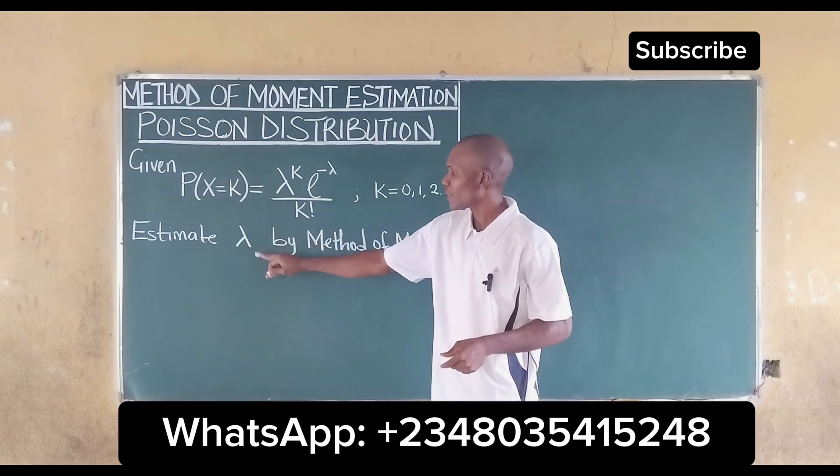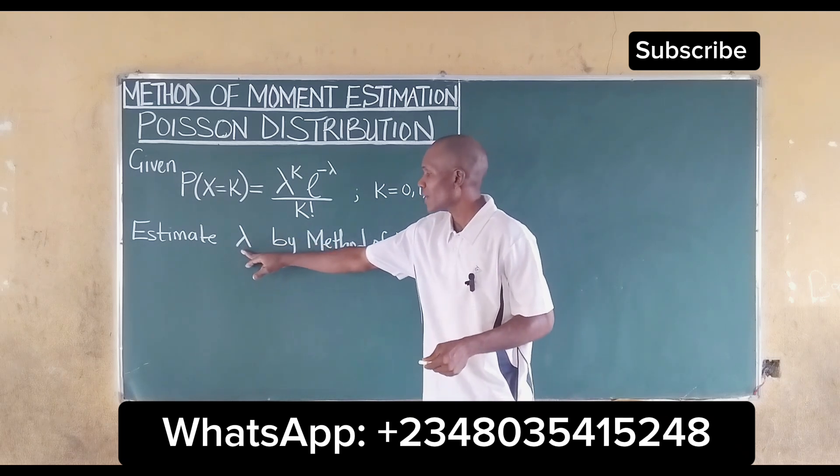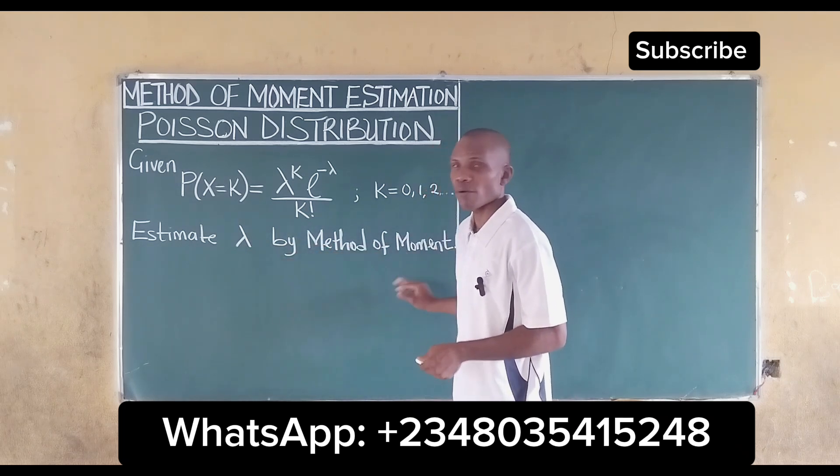We should note that the parameter for the Poisson distribution is lambda, and we are asked to estimate lambda by method of moment.